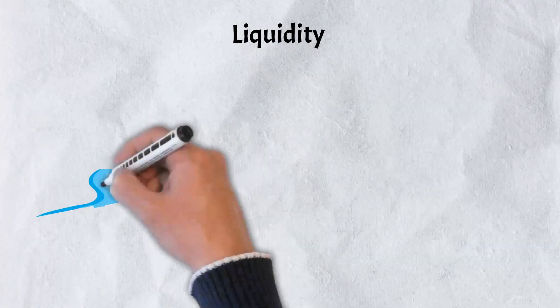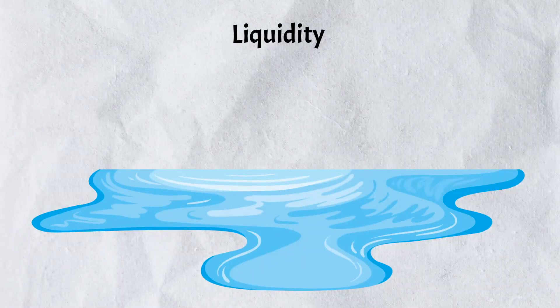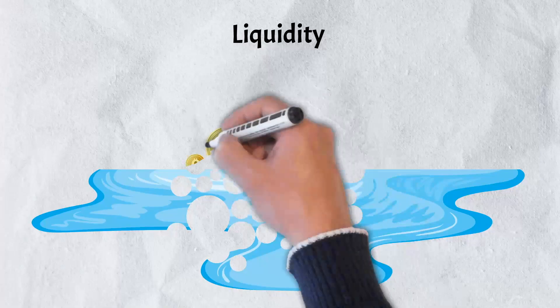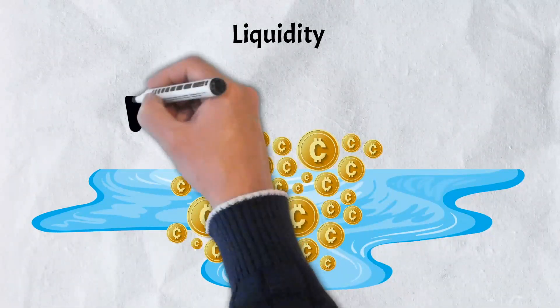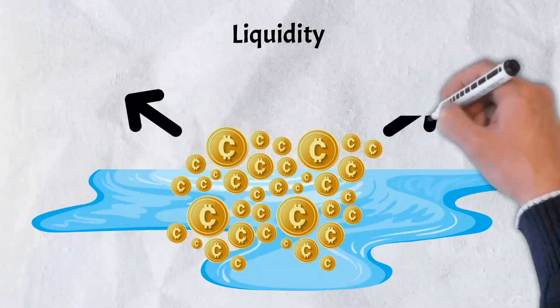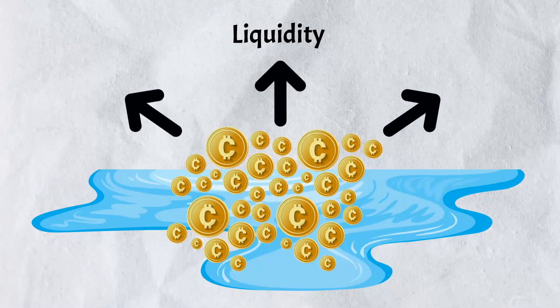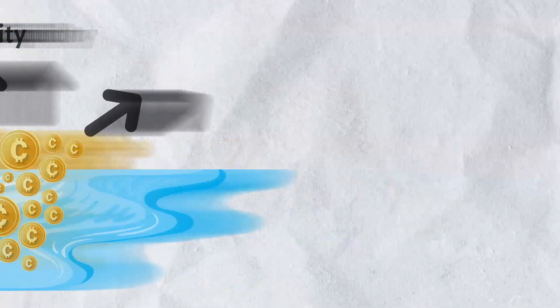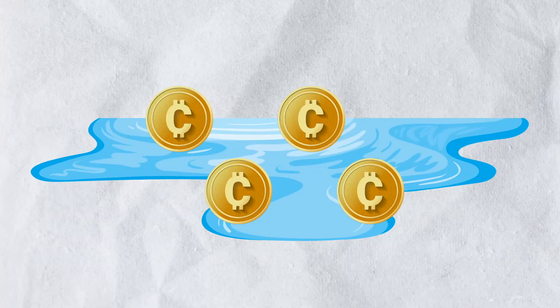The first point of concern is liquidity mining. DeFi protocols can suffer from a lack of long-term, practical incentives for liquidity providers. One typical issue with liquidity providers is that they routinely withdraw both their allotted resources and rewards once they are eligible or when a more competitive protocol with a higher APY becomes available. A diluted supply is often the result of these periodic and capitulated sales of a protocol's native tokens on the market.